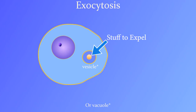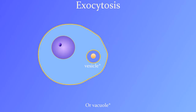Exocytosis occurs when a cell needs to get rid of something that is too big to get through the membrane. During exocytosis, a vesicle containing the stuff that the cell wants to expel moves to the membrane and fuses with it.